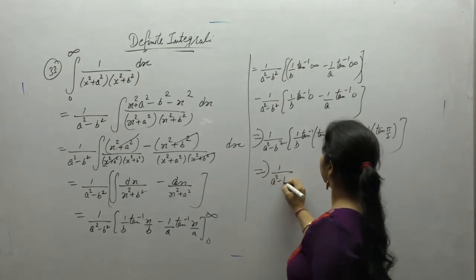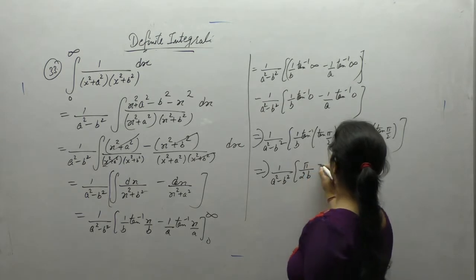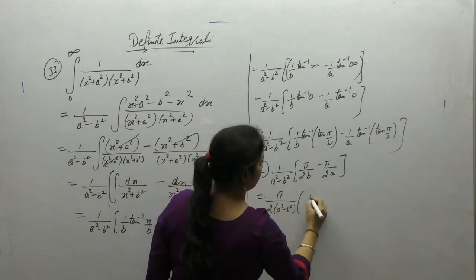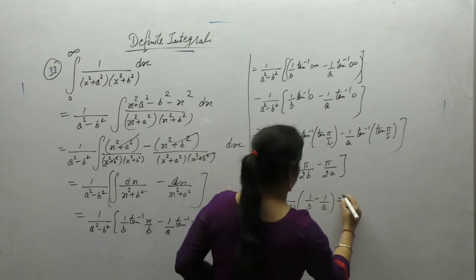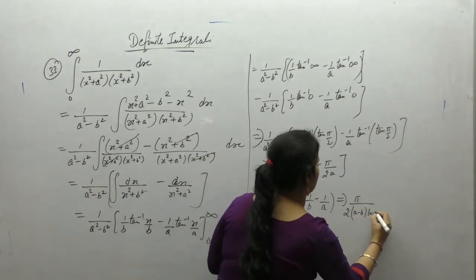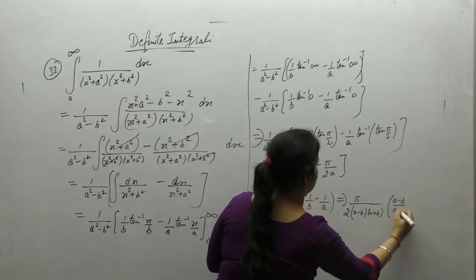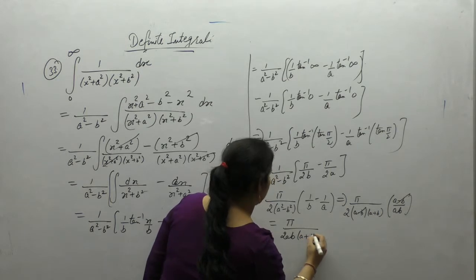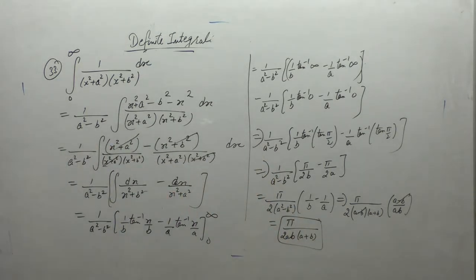Take π/2 common: 1/(a² - b²) times (π/2) times (1/b - 1/a). Take LCM and factorize: a² - b² = (a - b)(a + b). The (a - b) cancels, giving the final answer π/(2ab(a + b)).